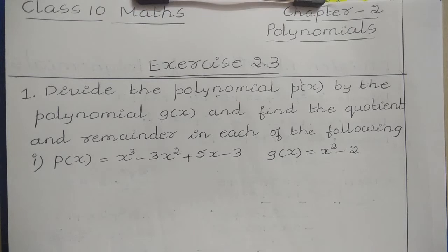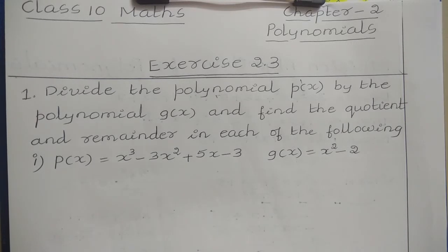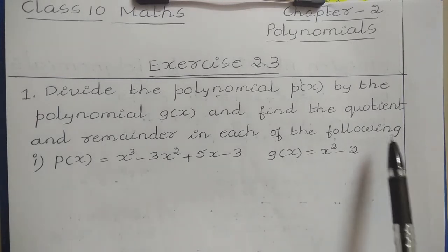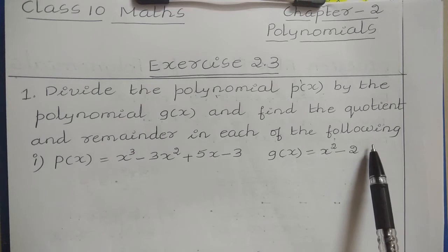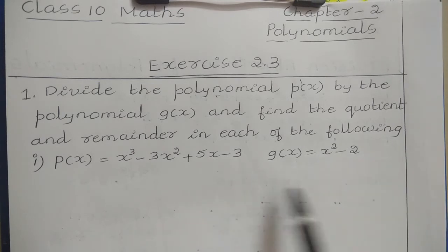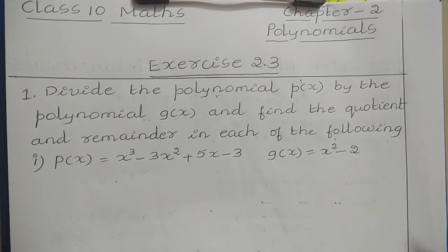In this video, we will discuss Class 10 Mathematics Chapter 2 Polynomials Exercise 2.3 Question No. 1 Solution: Divide the polynomial P of X by the polynomial G of X and find the quotient and remainder in each of the following. So here there are three subproblems. Let us solve the subproblems one by one.